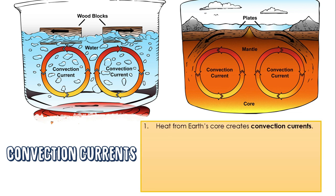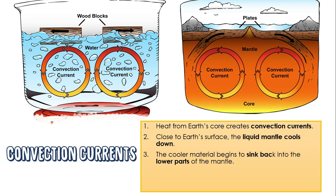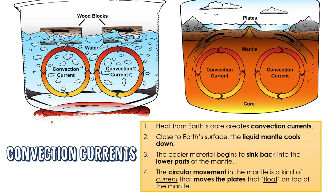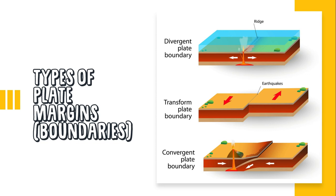Here is the step-by-step process: first, heat from the earth's core creates convection currents. Second, close to the earth's surface, the liquid mantle cools down. Third, the cooler materials begin to sink back into the lower parts of the mantle. Fourth, the circular movement in the mantle is a kind of current that moves the plates floating on top of the mantle.